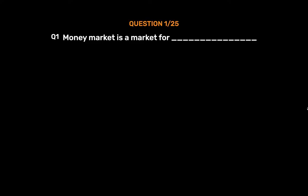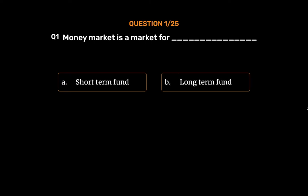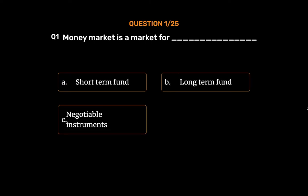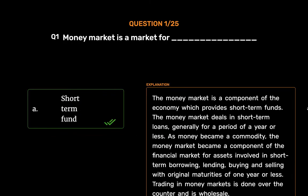Question No. 1. Money market is a market for _____. Option A: Short-term fund. Option B: Long-term fund. Option C: Negotiable instruments. Option D: Sale of shares. The correct answer is Option A: Short-term fund.